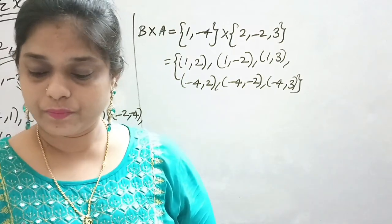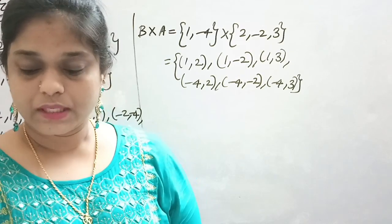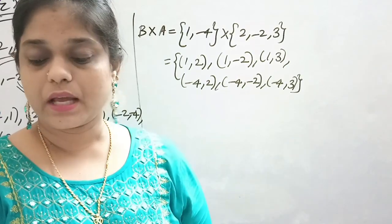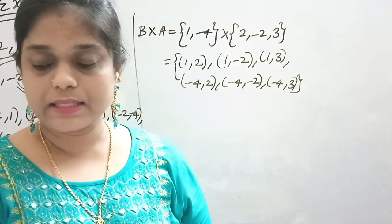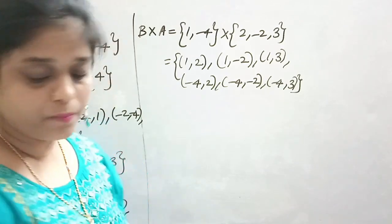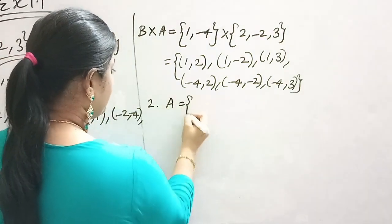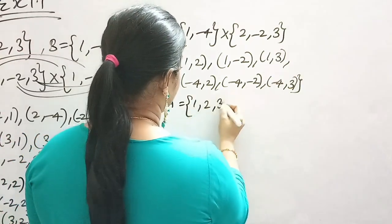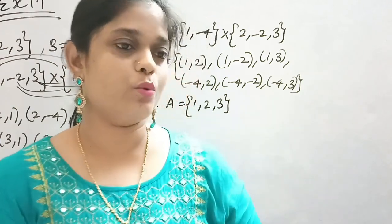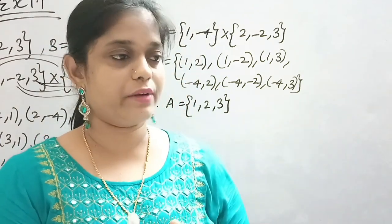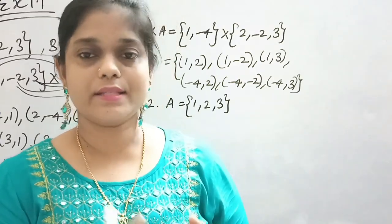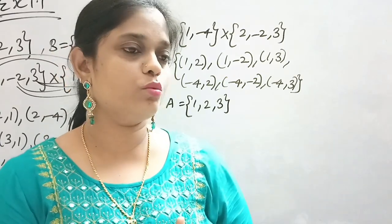Second sum: A is given. B set is given in set builder form — X such that X is a prime number less than 10. So we need to find what the prime numbers less than 10 are. Prime number means a number divisible only by 1 and itself.